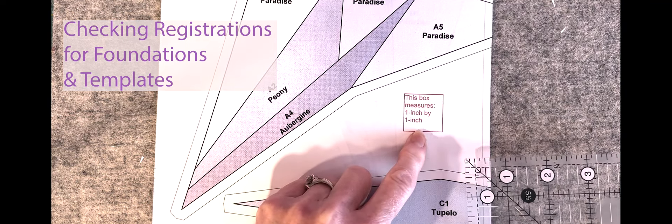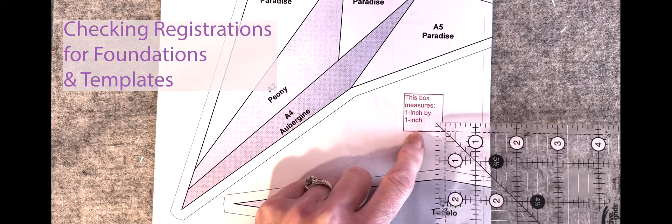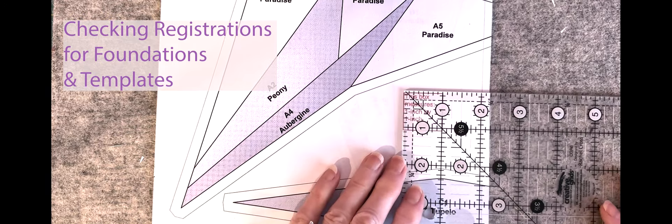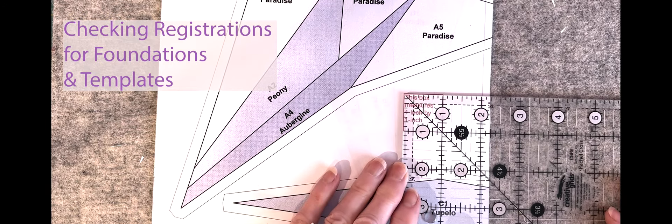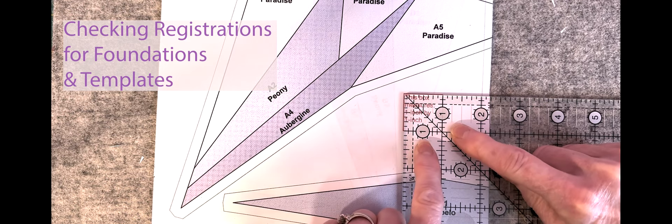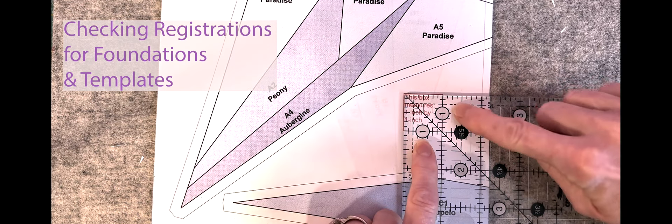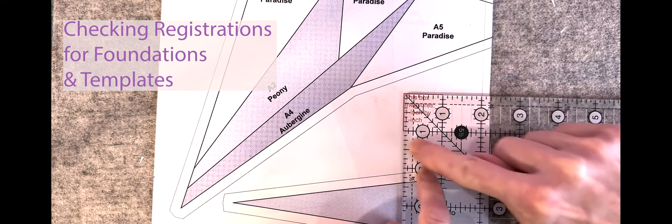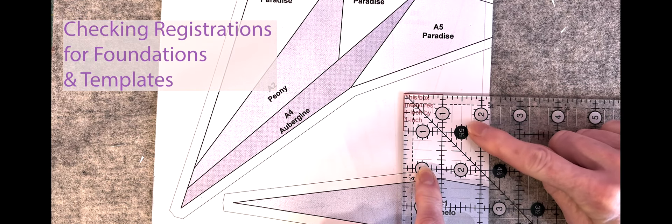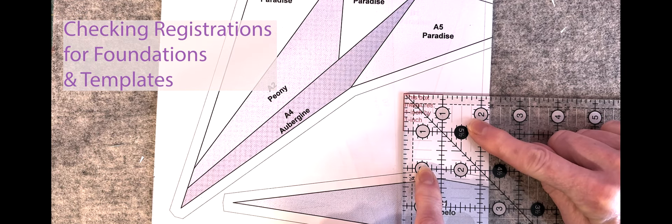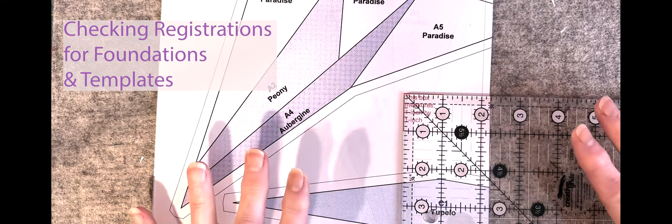Almost all patterns should come with this mark here or something similar to it. It's a registration mark, and the registration mark is something that you should measure with a trusty ruler. It says it should measure one inch by one inch, and as you can see here, mine does measure one inch by one inch, so I know I have the right size.